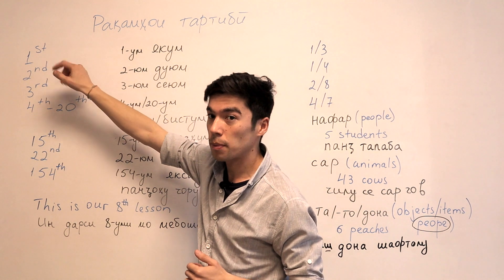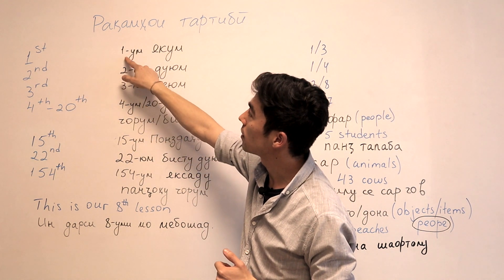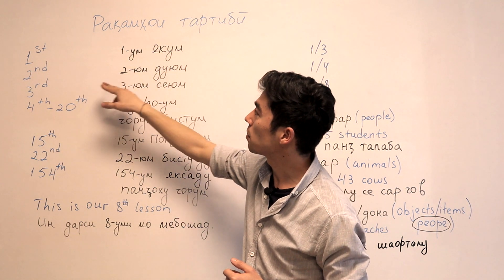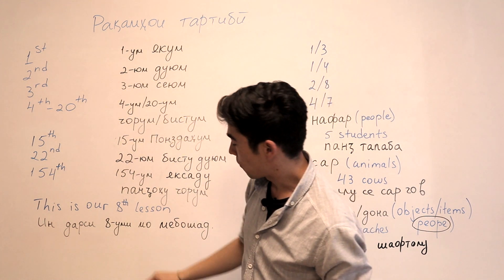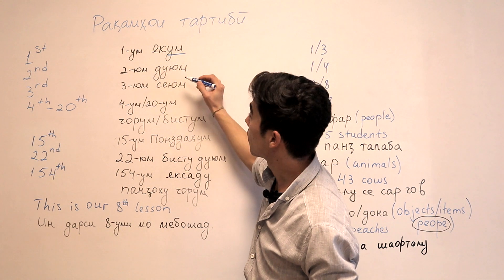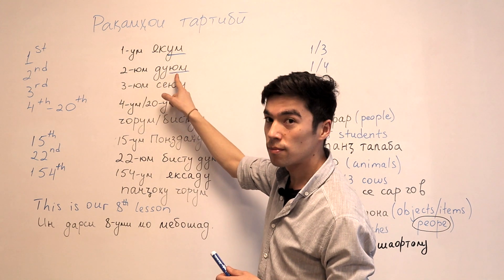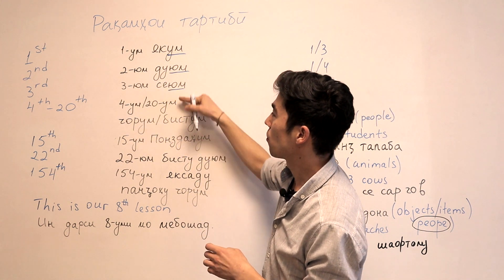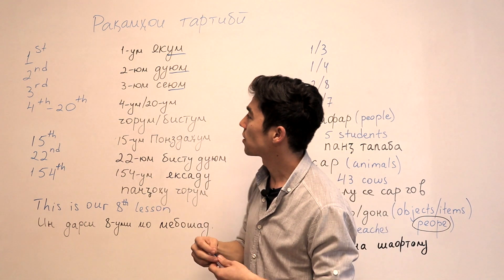Okay, so RAKAMHUYI TARTIBI. First will be YAKKUM, this is how we write it. 1-UM, YAKKUM. And then second would be DUYUM. So you see here, it's different. Here it's UM and then we have YUM. So for DUYUM and the next one SEYUM, we have YUM. But the rest is UM, the same. Yeah, we'll talk about that later.